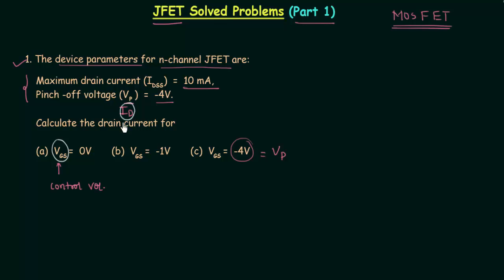Now we already know the relation between VGS and the drain current ID. The drain current ID is equal to IDSS times (1 - VGS/VP) squared.